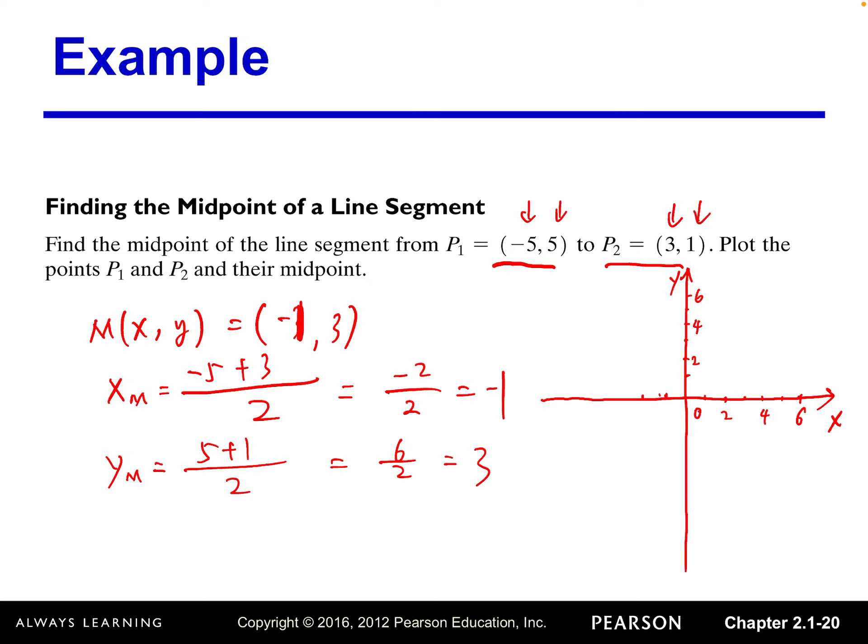Same thing. 1, 2, 3, 4. Negative 5 plus 5. Go left 5 and then go up 5. So it's here.